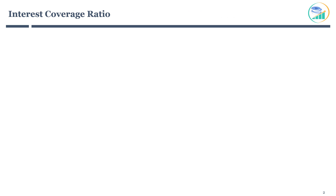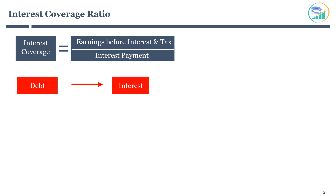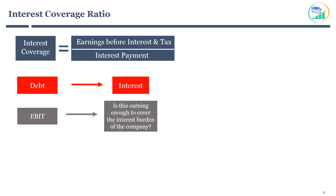Let's start with the first one — interest coverage. It is calculated as earnings before interest and tax divided by interest payment on debt. When a company has debt, it must pay interest. The interest coverage ratio helps in understanding how much the company is earning, which is profit before interest and tax payment, and whether this earning is enough to cover the interest burden of the company.